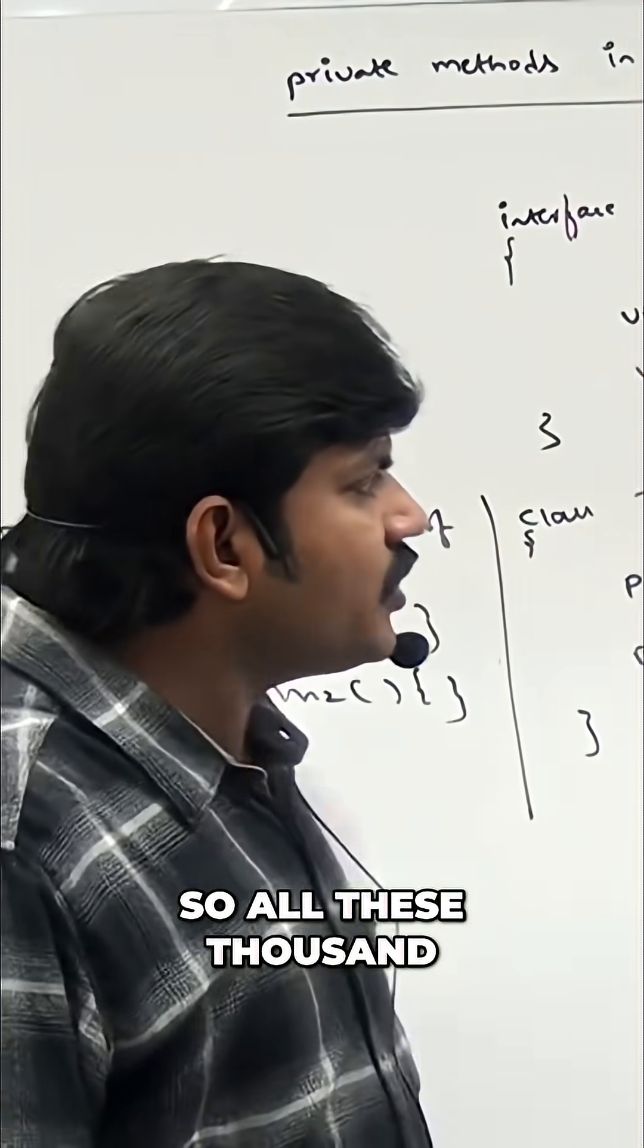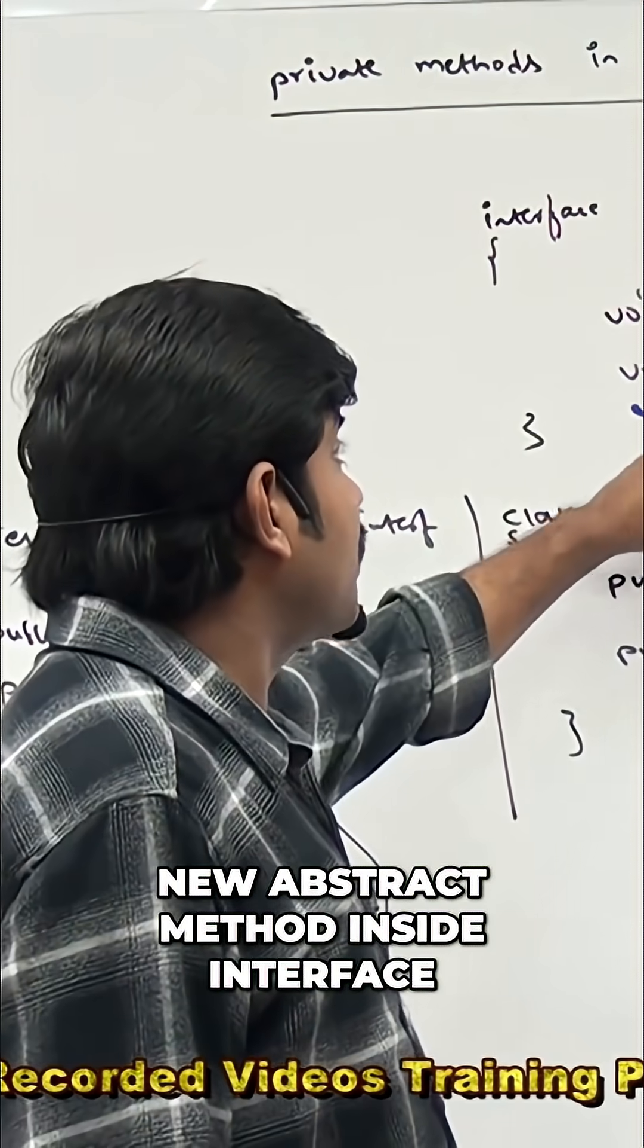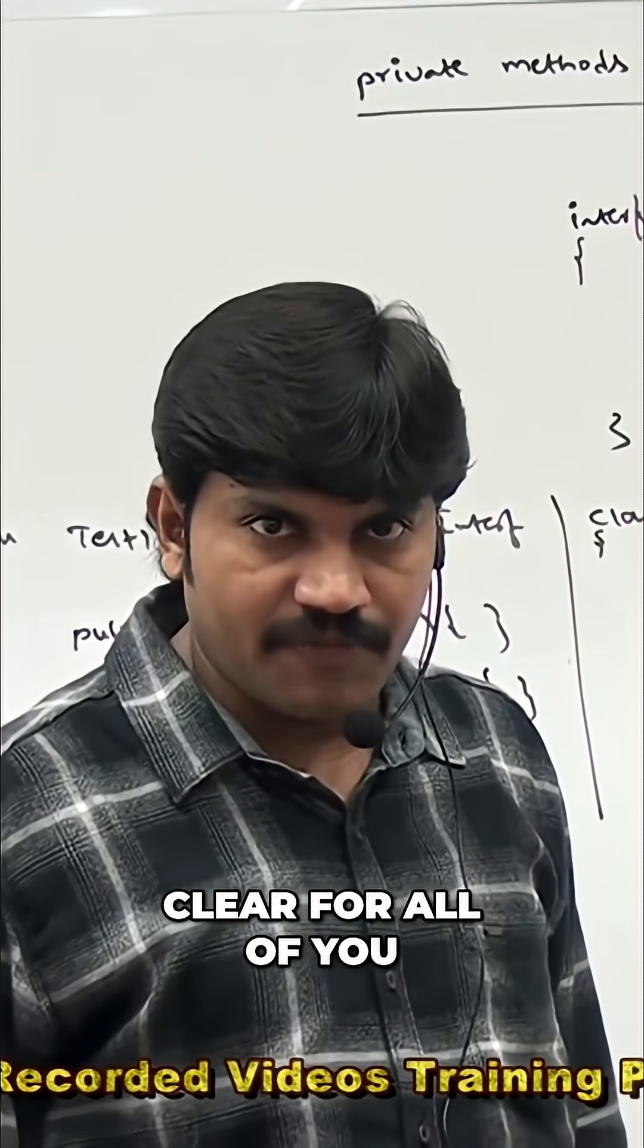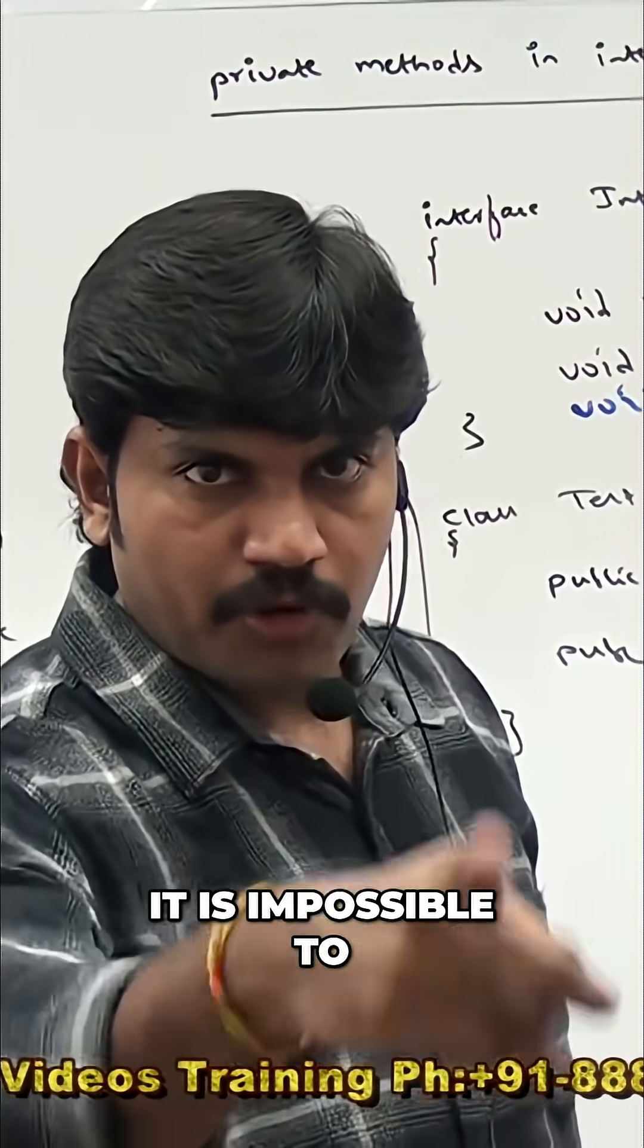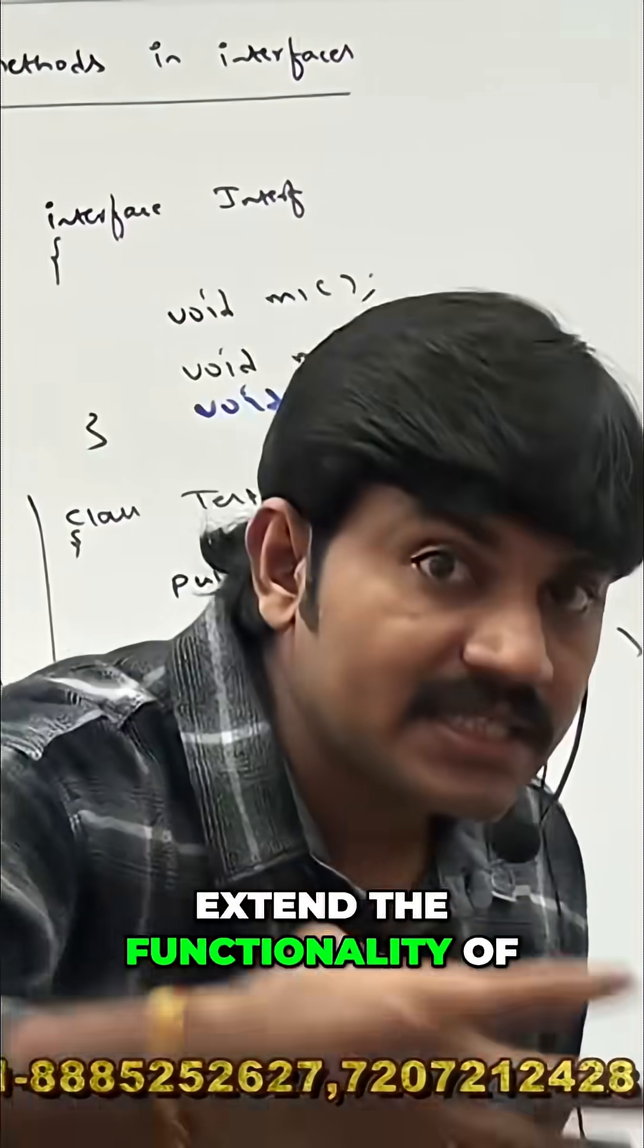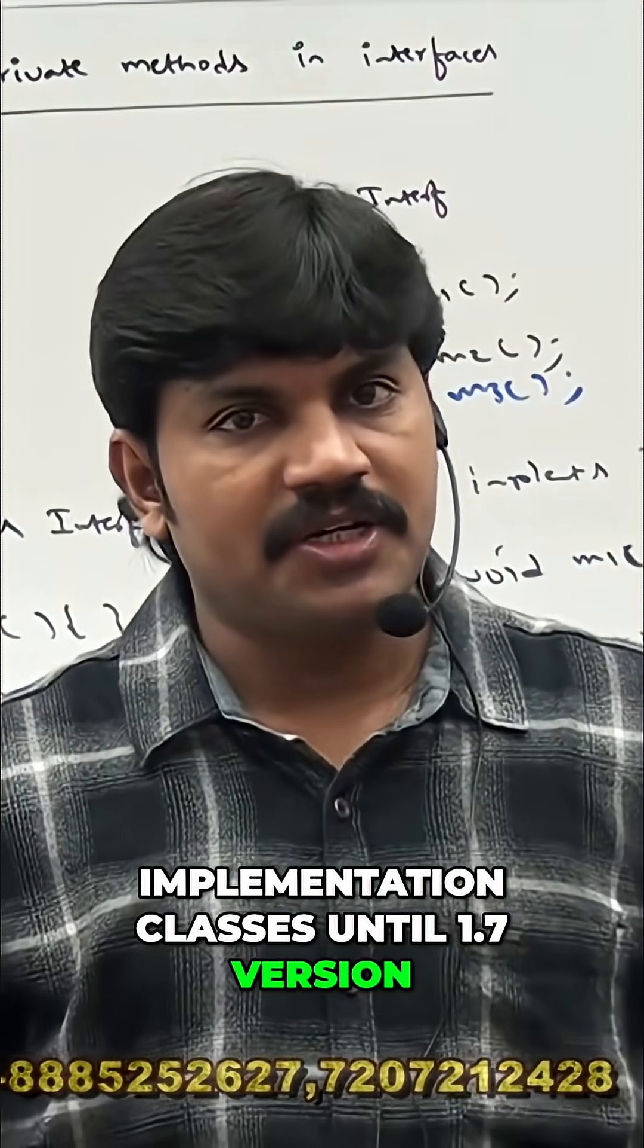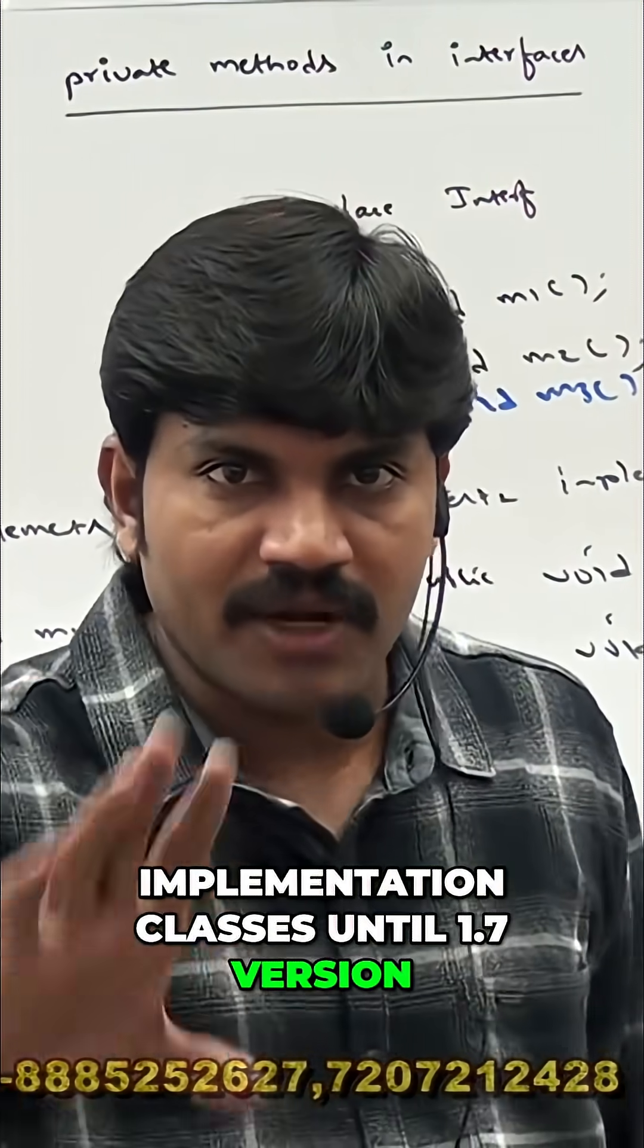So, all these thousand classes will be affected because of adding this new abstract method inside interface. Clear for all of you, right? It is impossible to add new method to extend the functionality of an interface without affecting implementation classes until 1.7 version.